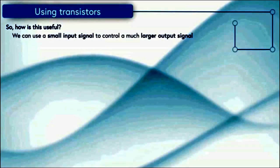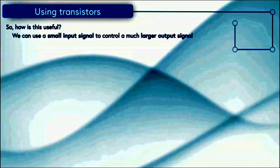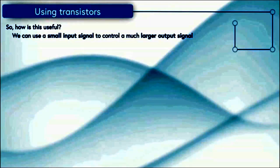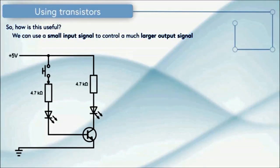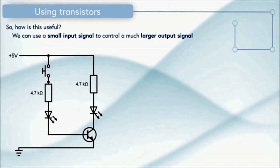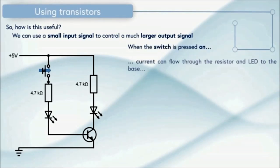So how is this useful? Well, we can use a small input signal to control a much larger output signal. So what I've done is I've made a bit of a modification to my circuit. I've replaced a lamp with some LEDs and you can see I've got my transistor connected through to a slightly different circuit on the input side. So when the switch is pressed on, that means that current can flow through the resistor and the LED to the base and the LED that's connected to the base turns on but it's not very bright.